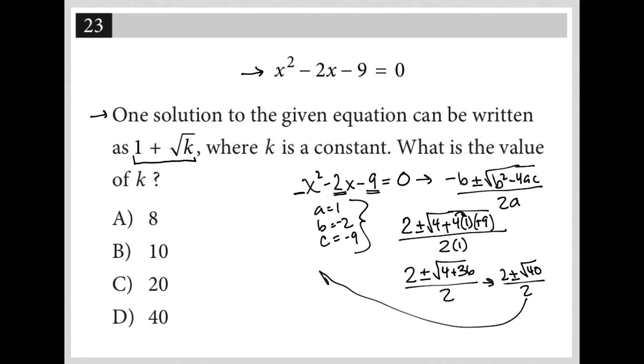The square root of 40 can be broken down into √4 times √10. The square root of 4 is 2, so this becomes 2√10. So I'd have (2 ± 2√10) / 2, which can be simplified further.